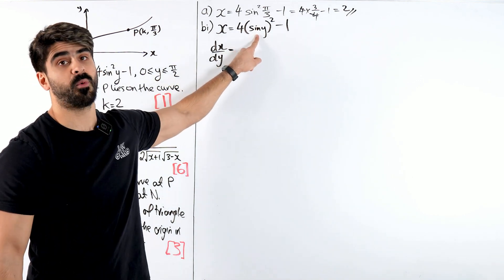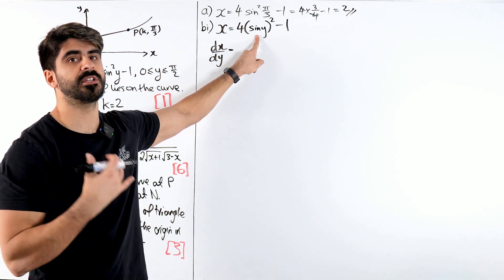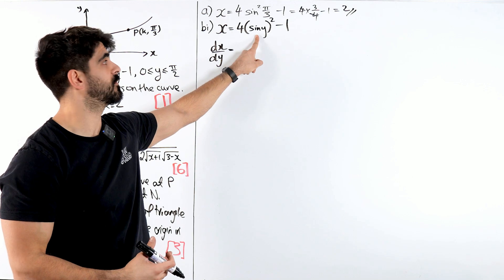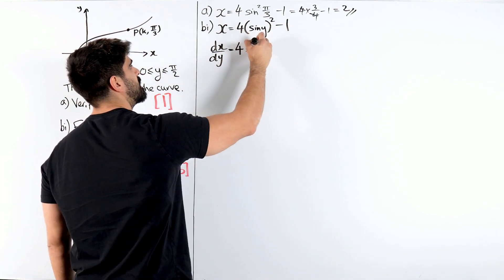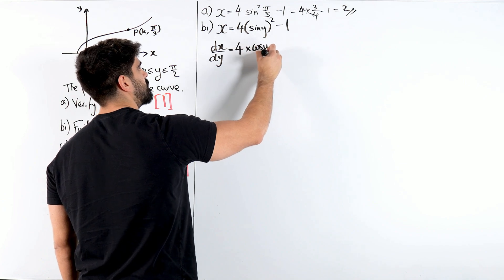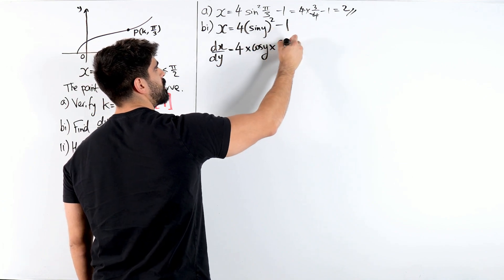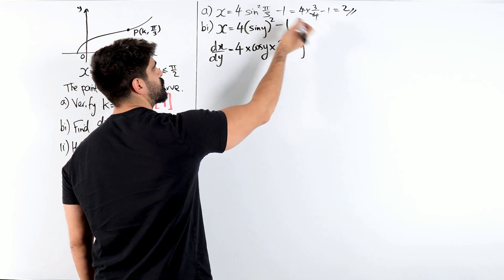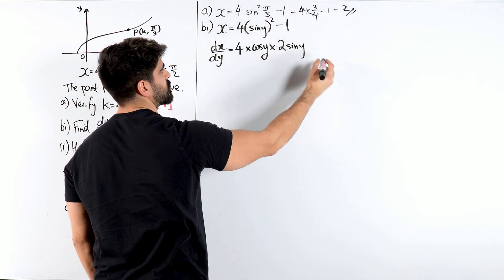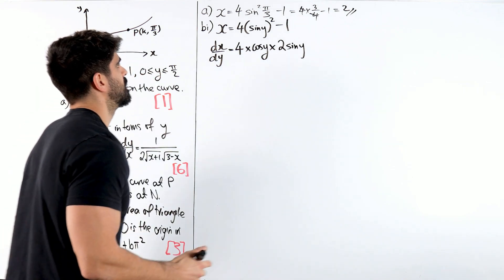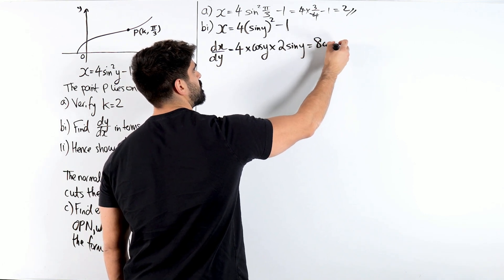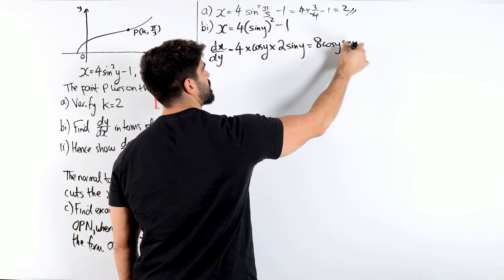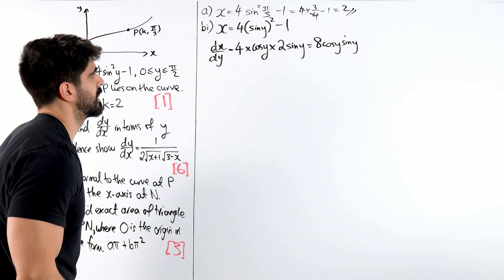So how do we differentiate power functions? The sin y, I call it the angle, you differentiate that first. You always differentiate what's inside the bracket first. Now the 4 is just a multiplier, so 4 lots of sin differentiates to cos y, then we bring down the power, knock 1 off the power. Bring down the 2, knock 1 off the power, makes it power 1, so it's just sin y, and the 1 just disappears. So here we're just left with 8 cos y sin y.